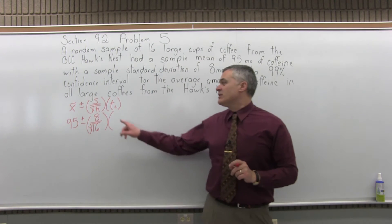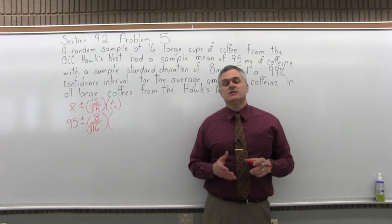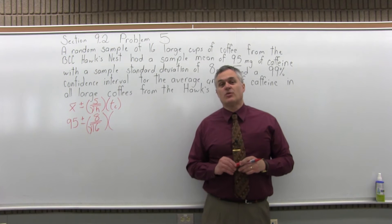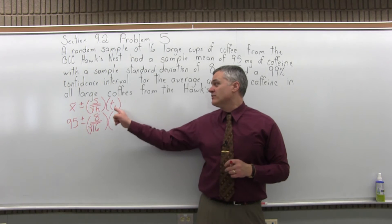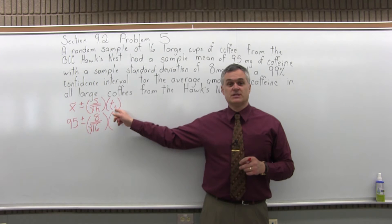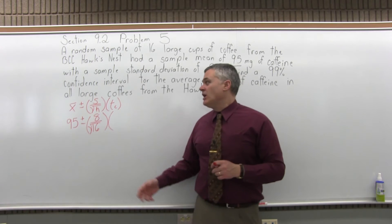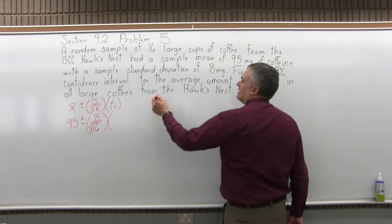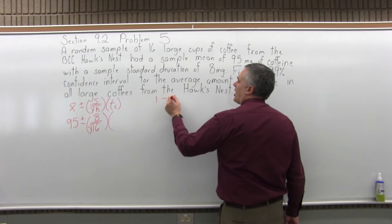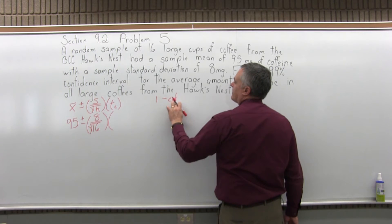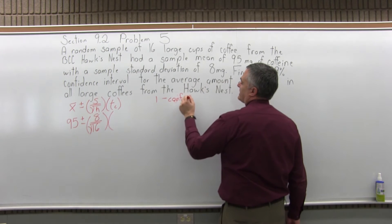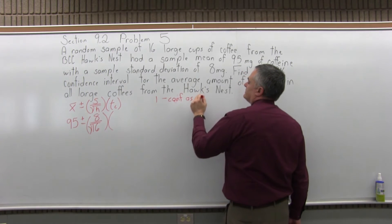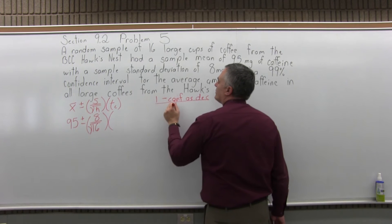So to find this value of t sub c, you want to go to the student's t distribution, which is attached to the end of the homework assignment. Find the correct row and the correct column and see where they intersect. That will give you the value of your confidence coefficient, t sub c. So the column is determined by doing 1 minus the confidence interval as a decimal over 2.